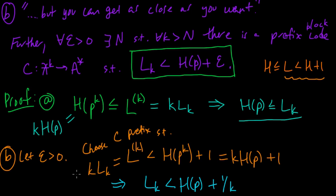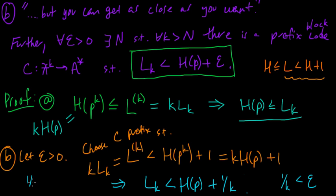We can now see the result. We need to choose N so that for any K greater than N, we get L_K < H(P) + epsilon. All we need is 1/K < epsilon. So choose N such that 1/N < epsilon. Then for any K greater than N, 1/K is also less than epsilon, and we have the result. That completes the proof.